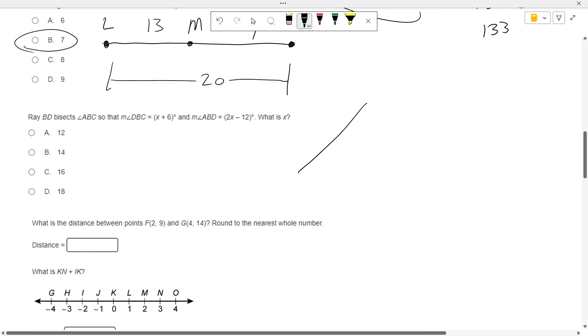Ray BD bisects ABC. So we'll draw A, B, C, B, D bisects ABC. DBC is X plus 6. ABD is 2X minus 12. What is X?